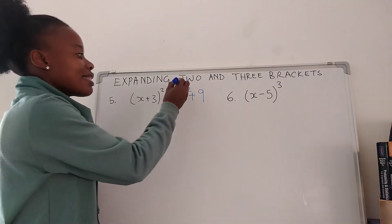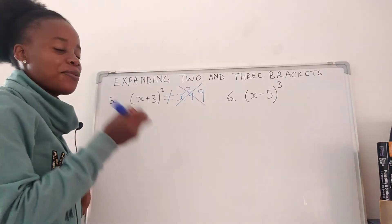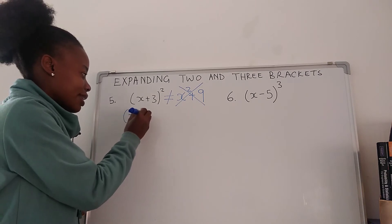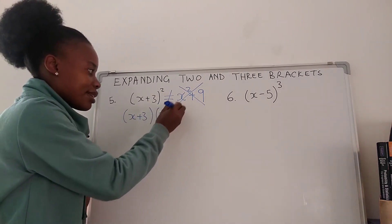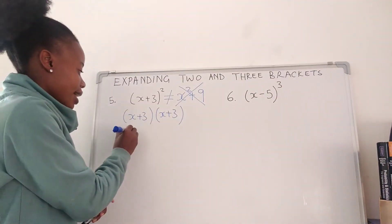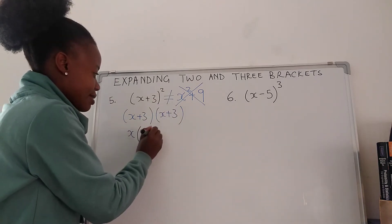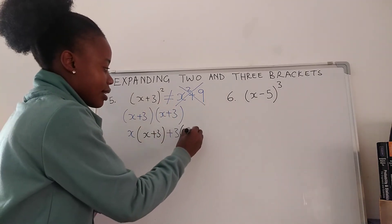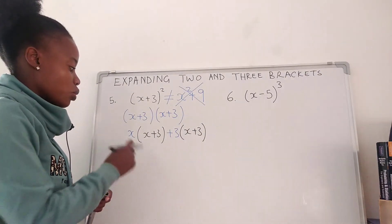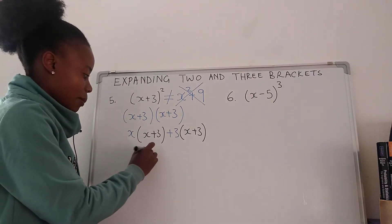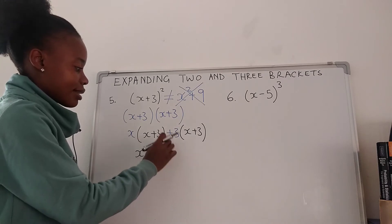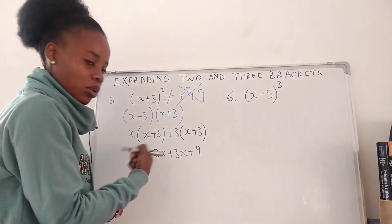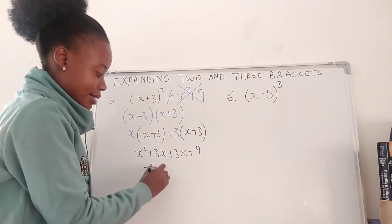So (x + 3) squared is the same as (x + 3) times (x + 3). You multiply x with everything on this side, and 3 with everything on this side. So we're going to have x times x which is x squared, plus x times 3 is 3x, then 3 times x is 3x, then 3 times 3 is 9. We collect like terms: x squared plus 6x plus 9.